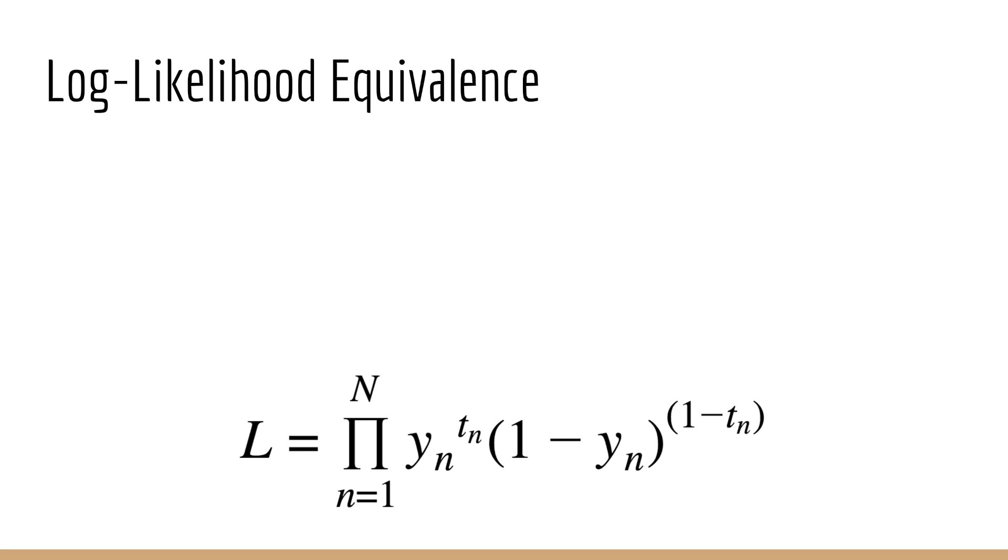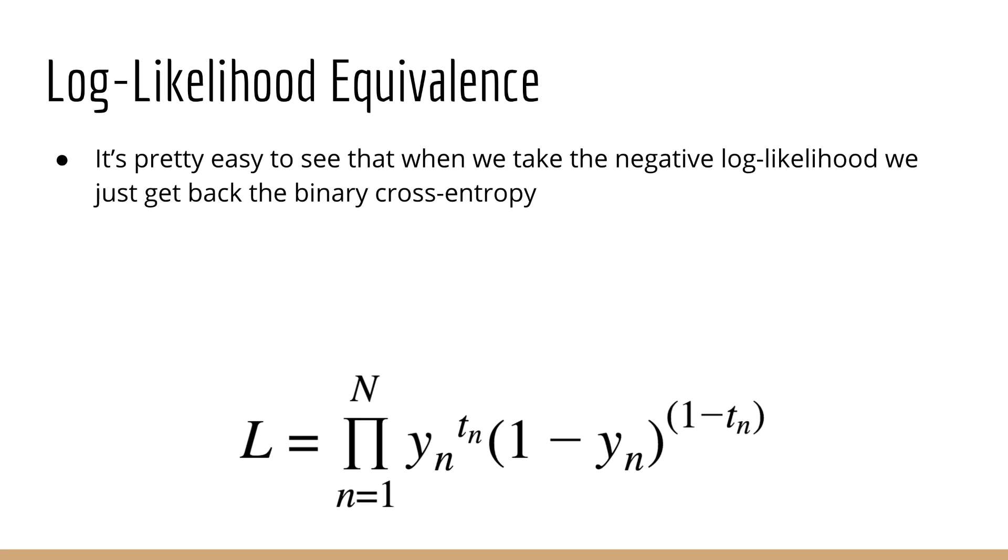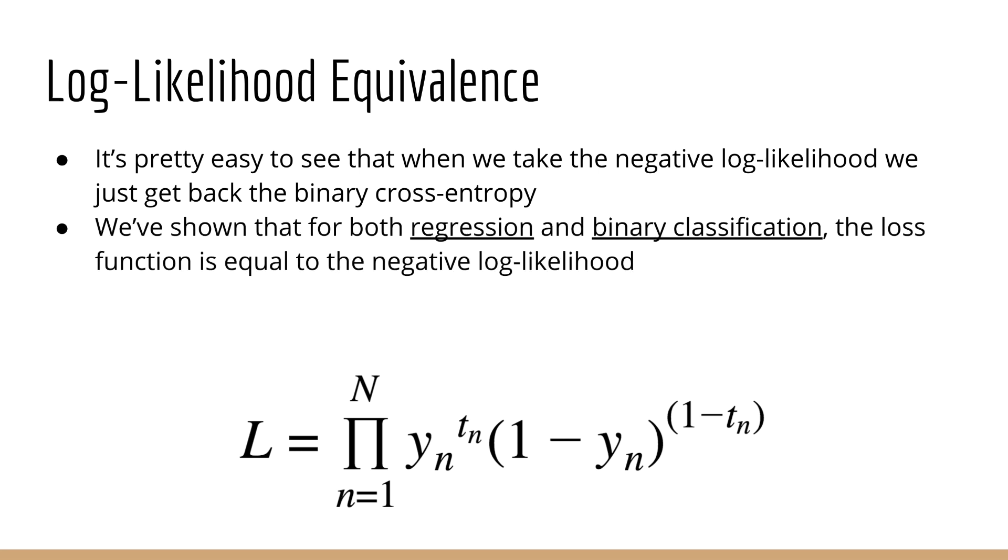I think it's almost immediately obvious that when you take the log of this and negate it, you get back the cross entropy error function which we just saw. And so what we realize is, in both cases, for both regression and binary classification, our cost function or our loss function is actually the negative log likelihood. And by the way, keep in mind, I'm just using the letter L for everything here, so don't equate them to each other across different slides.